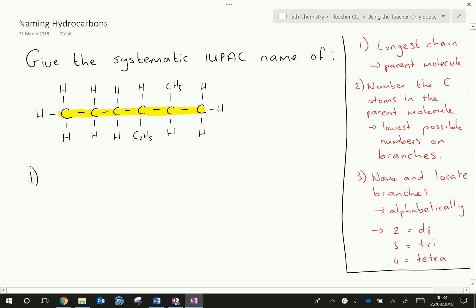Okay, so if I have six carbons in a row, that means my prefix is going to be hex. And because all of these carbons are singly bonded to each other, all single bonds, that means it's an alkane. So my parent molecule is hexane.